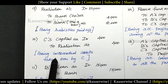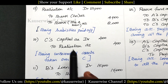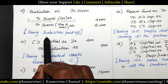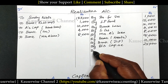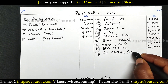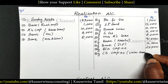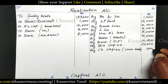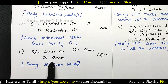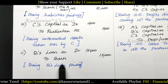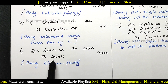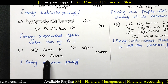Tenth entry — unrecorded assets taken over by C: C's Capital Account Dr. to Realization Account — enter under credit side of realization account — 400. Eleventh entry — B's loan paid: B's Loan Account Dr. to Bank Account — 15,000. There is no realization account in this entry, so record it under bank account only.